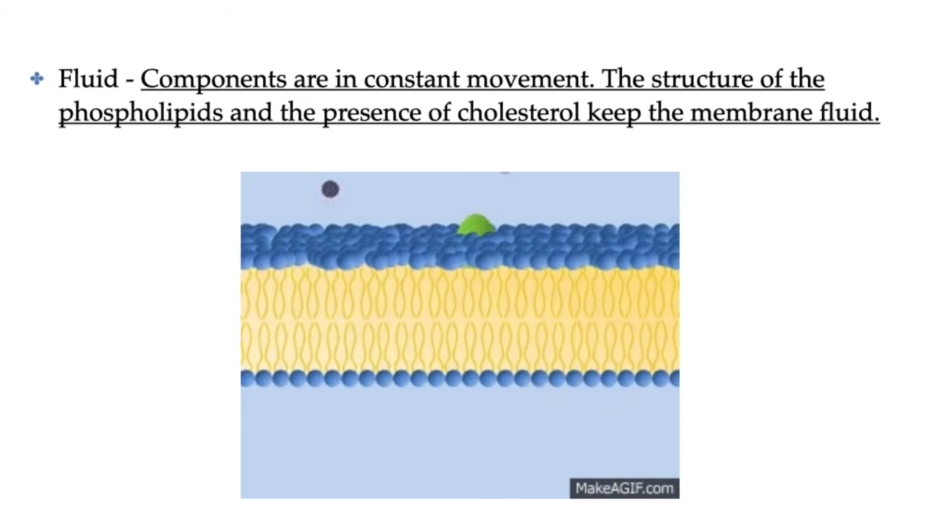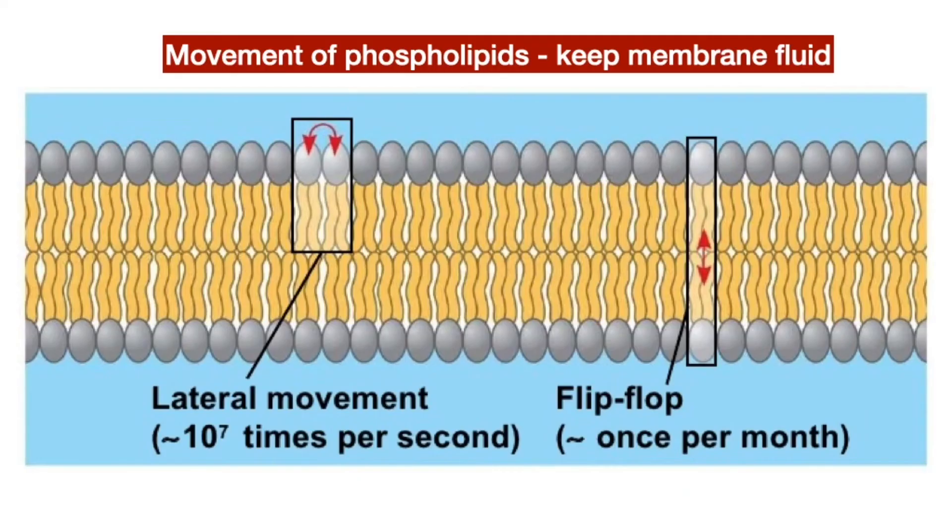Let's start with the word fluid. The cell membrane is fluid because the phospholipids and the proteins embedded between them are free to move. The components of the plasma membrane do not stay in one place—they are in constant motion. This fluidity is due to the structure of the phospholipids and is also helped along by the presence of cholesterol molecules. The phospholipids of the plasma membrane are not static, they are in constant movement.